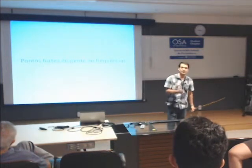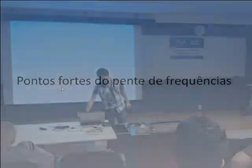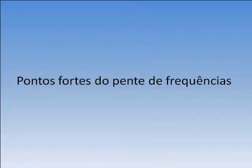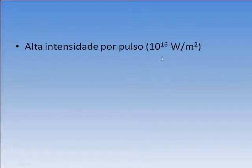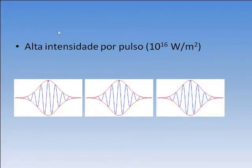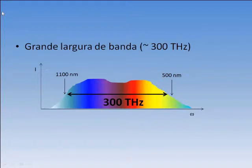Os pontos fortes do pente de frequências — eu posso colocar pelo menos três aqui. Um é que você tem alta intensidade por pulso. Eu estou falando de um laser de titânio safira. Estimando a intensidade por pulso, você tem mais ou menos 10¹⁶ watts por metro quadrado. Você tem uma grande largura de banda: isso aqui é intensidade versus frequência, você tem um espectro que vai de 1100 nanômetros até 500 nanômetros — mais ou menos 300 Terahertz. Qualquer frequência que esteja neste intervalo, você pode usar o laser para fazer medidas com alta precisão.